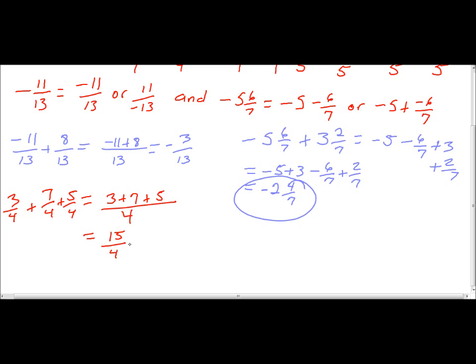Well, we can reduce or simplify by dividing 4 into 15. And, of course, that's 3. And 3 times 4 is 12. And we are going to subtract 12 from 15. And that's going to give us 3. So we have 3 and 3 fourths for our answer.